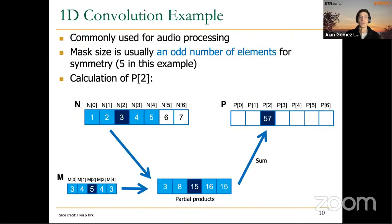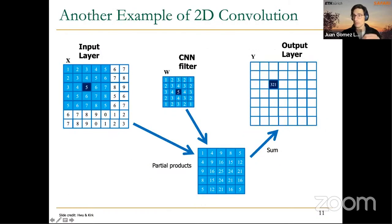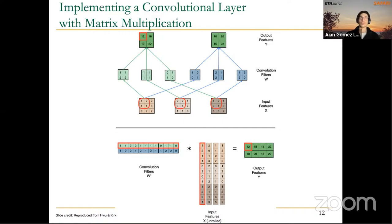The next parallel pattern we covered is convolution. Convolution consists of placing a mask or filter on top of all elements of an input image or data structure. After placing the mask on top of the input, we obtain partial products and then reduce them to obtain a final value. This can be done in one dimension or more. Here we have an example with a two-dimensional convolutional filter, which is a simplified representation of a convolutional layer. We also discussed that convolutional layers can be converted into matrix multiplication operations that are more suitable for the GPU architecture.